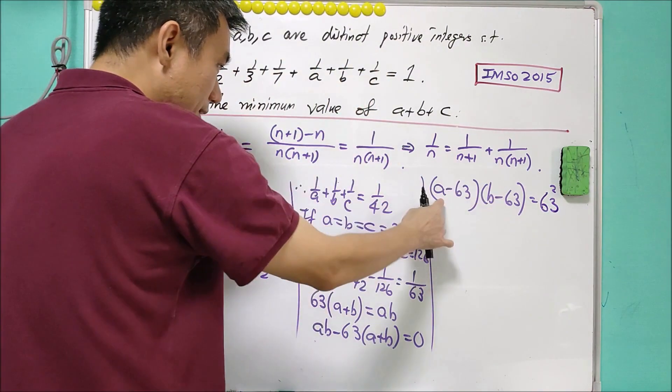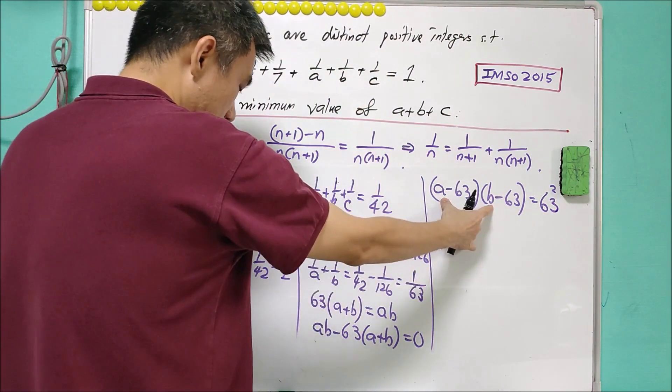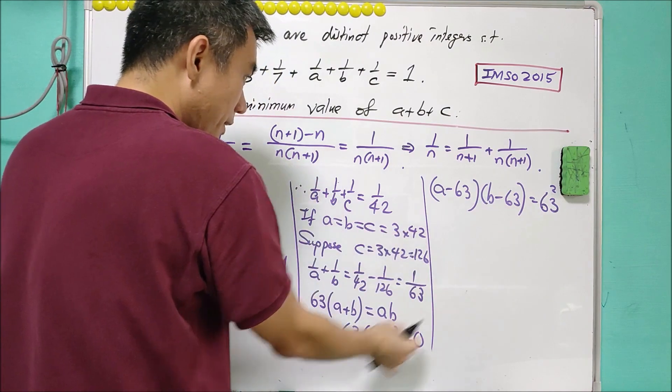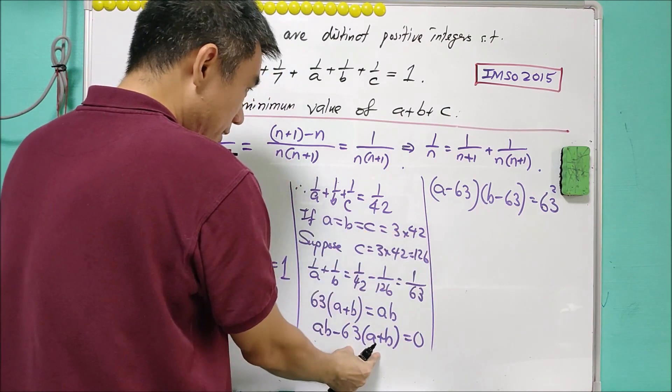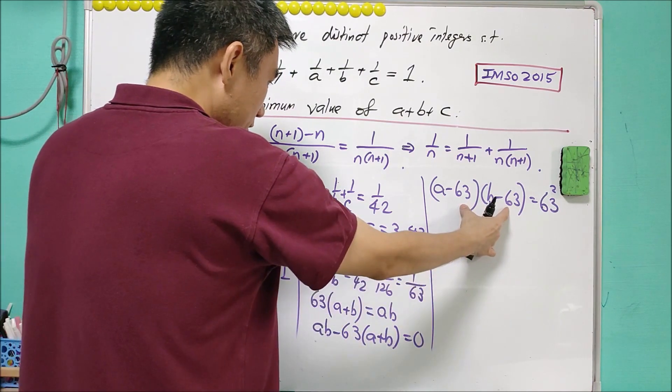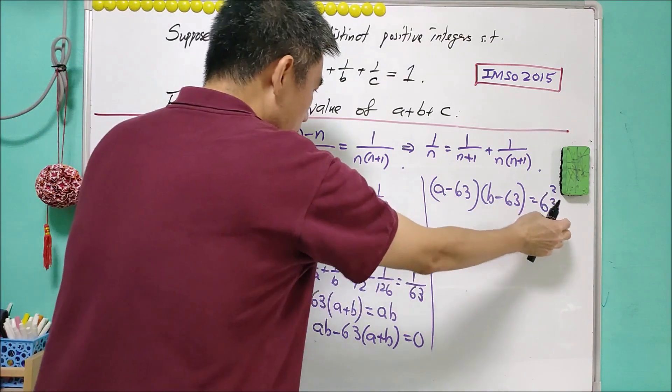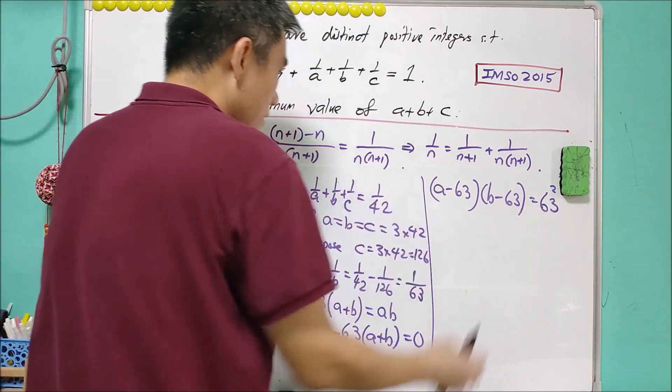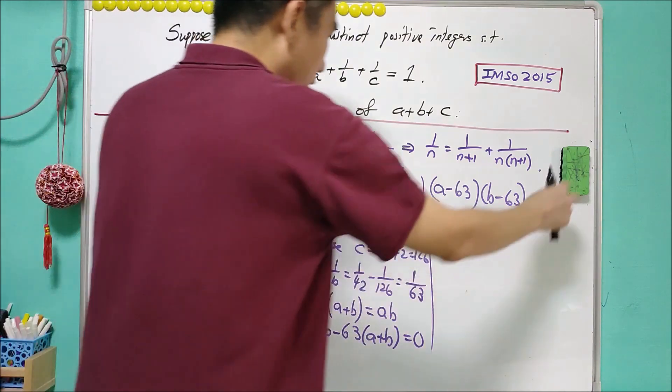Okay, when you expand this, you'll have AB minus 63A minus 63B. And you have extra 63 squared. That's why we need to add 63 squared on the right-hand side.